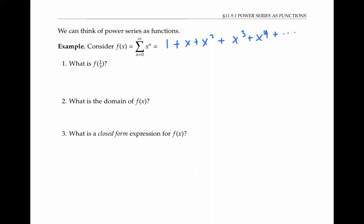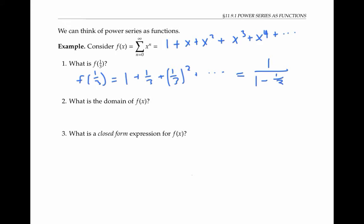Please pause the video and calculate f of one third. f of one third is equal to one plus a third plus a third squared, and so on. This is a geometric series, so it adds up to the first term one divided by one minus the ratio of one third, and that simplifies to three halves.